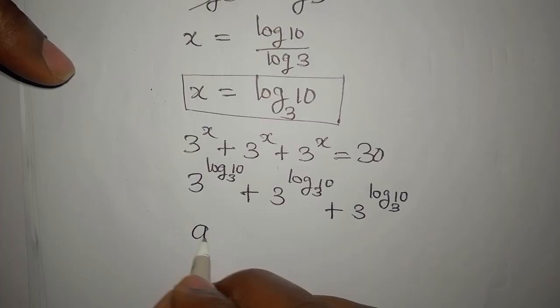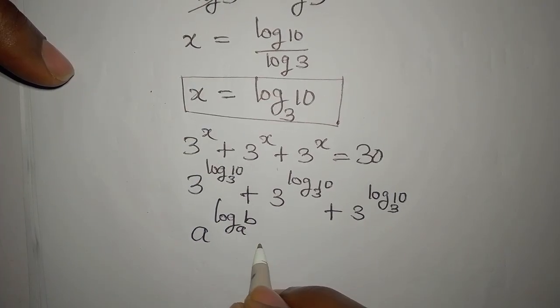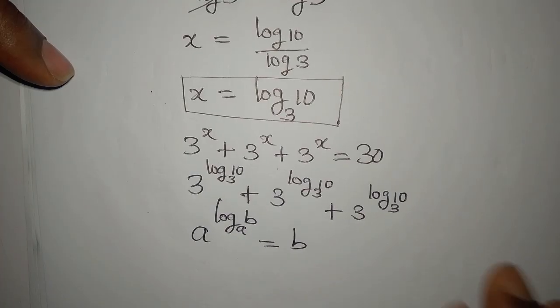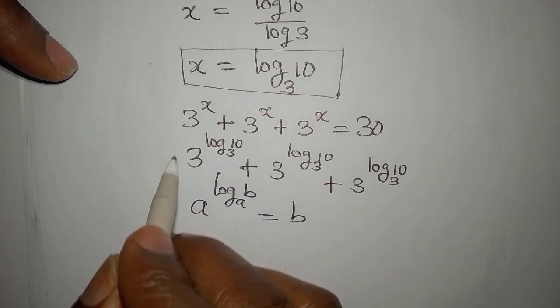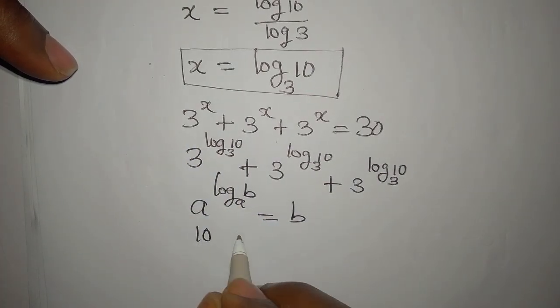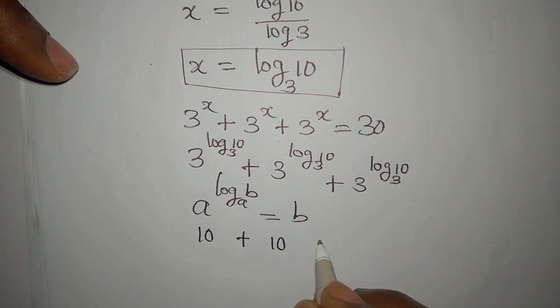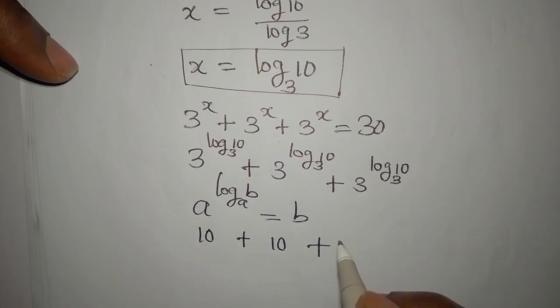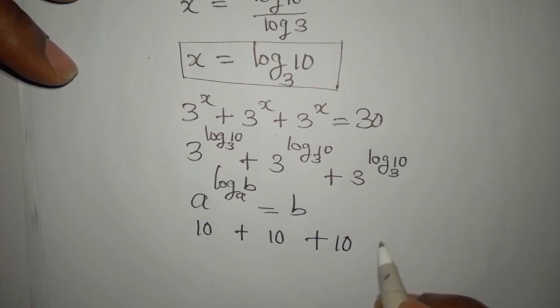Mind you, if you have a to the power of log b to base a, this is equal to b. So if you compare this to this, it means that the whole of this is going to be 10 plus the whole of this another 10 and the whole of this another 10, so that 10 plus 10 plus 10 will now give us 30.